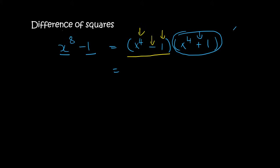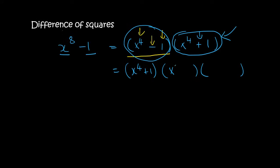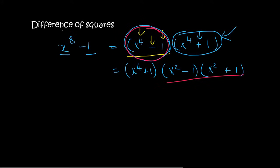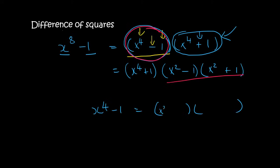Remember, it has to be a minus for difference of squares to work. So what do we do with the plus bracket? We don't ignore it — we just write it at the front and carry on with the minus bracket. That minus bracket will turn into two new brackets: x² and x², and 1 and 1, where one gets a minus and one gets a plus. So (x⁴ + 1) stays in front, and (x⁴ - 1) becomes (x² + 1)(x² - 1).